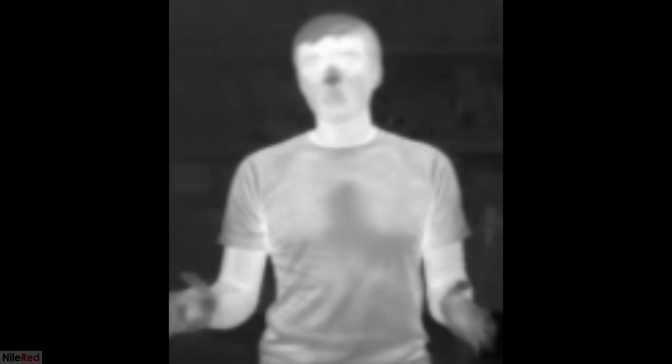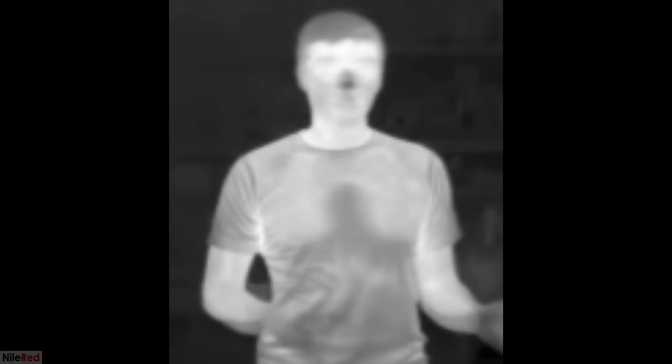Objects that are at or around room temperature radiate the majority of their thermal energy as infrared. So things like electronics, our bodies, etc. all release a pretty decent amount of infrared light.